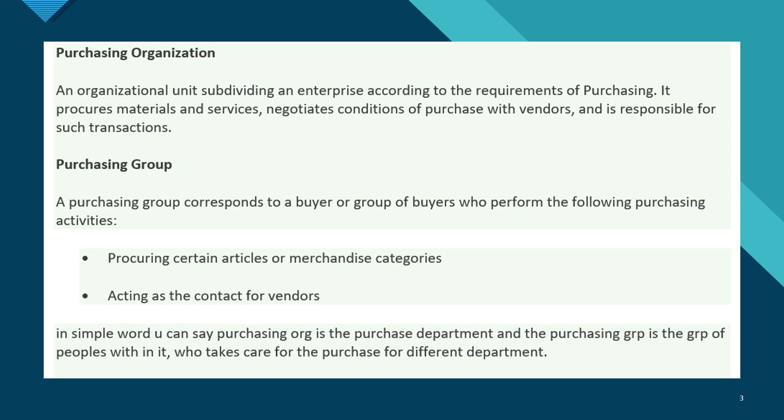The purchasing group performs activities such as procurement of various articles and acting as a liaison between vendors — they speak to vendors to negotiate prices and help in procurement of materials for the purchase organization. In simple words, the purchase organization is a department which carries out the purchasing activities, and the purchasing group are the set of people who take care of the different activities inside the purchase organization.